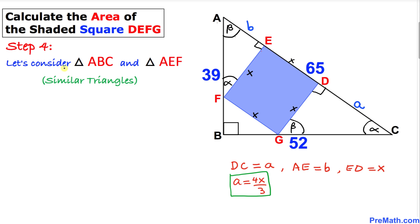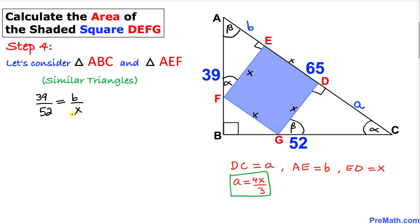Likewise, let's focus on triangles ABC and AEF. Since they are similar, we can write: 39 divided by 52 equals B divided by X. Reducing the left side gives 3 over 4 equals B divided by X. Multiplying both sides by X, the X cancels out and we get B equals 3X divided by 4.